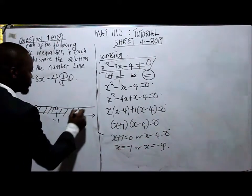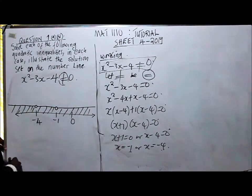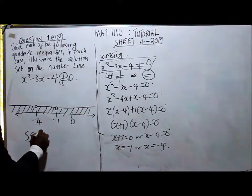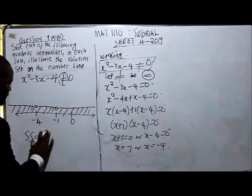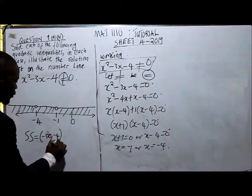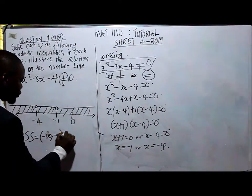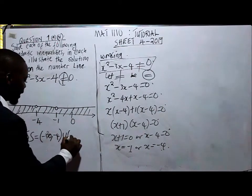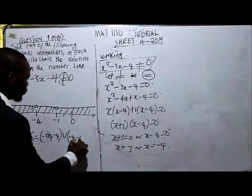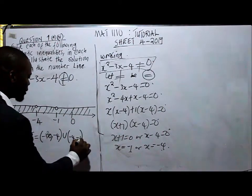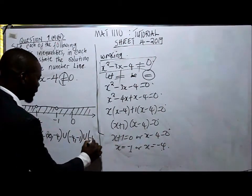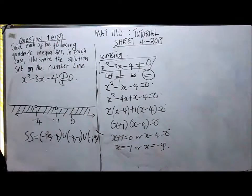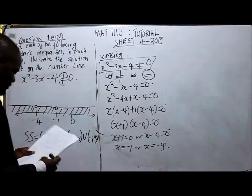So we have represented it on the number line. So the solution set equals negative infinity to -4, union -4 to -1, union -1 to positive infinity.